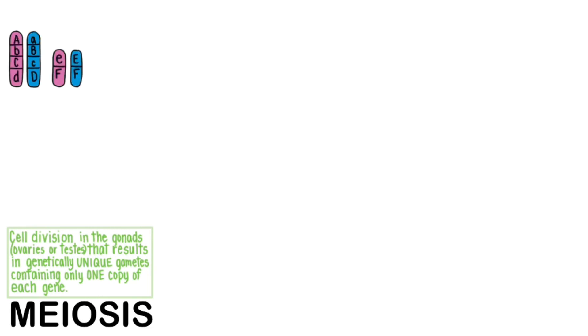Meiosis is cell division in the gonads — the ovaries or testes — that results in genetically unique gametes, eggs or sperm, containing only one copy of each gene. I will illustrate the key concepts with an example of an organism with only four chromosomes in its somatic or body cells.